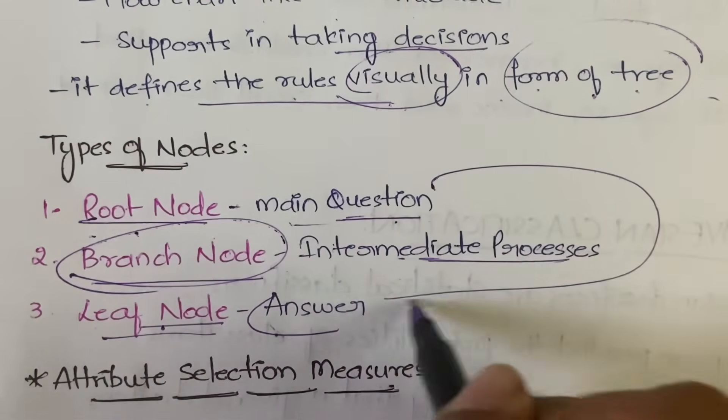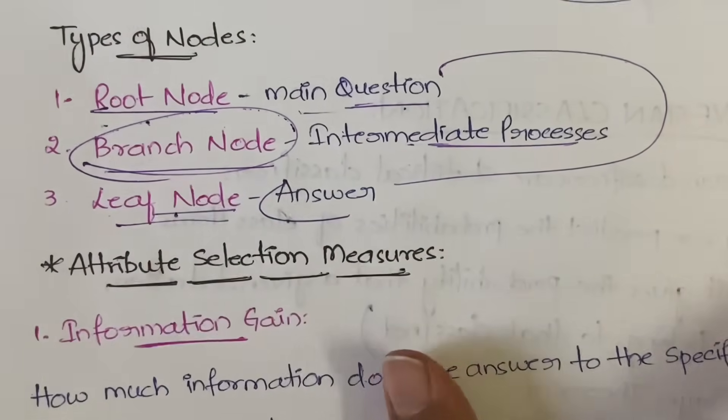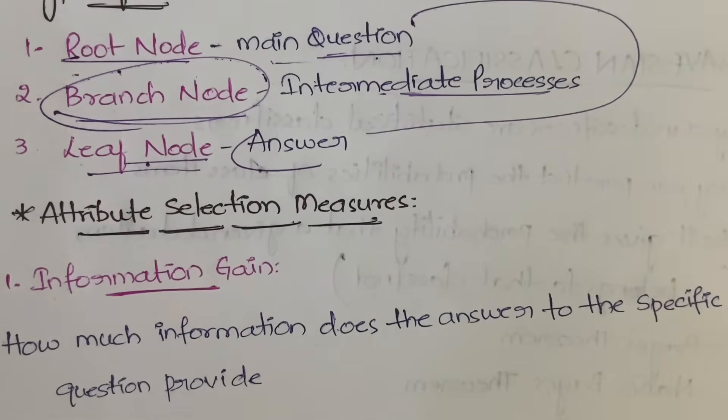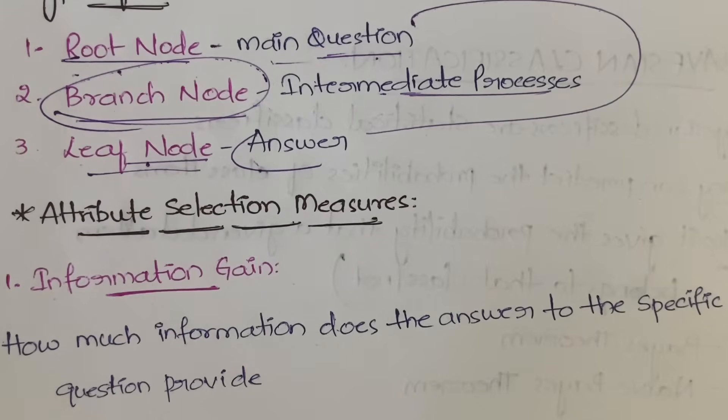Here we have attribute selection method measures. What do you mean by attribute selection measures? You are selecting any attribute to represent it in a decision tree. So how do you select that attribute? You select it based on two things: first is information gain and the other is entropy.